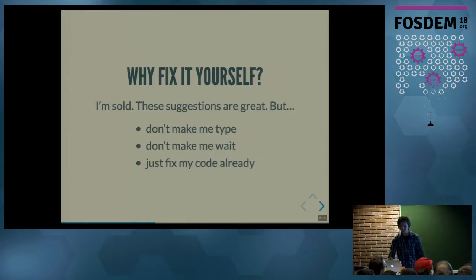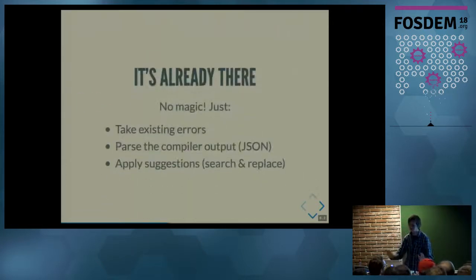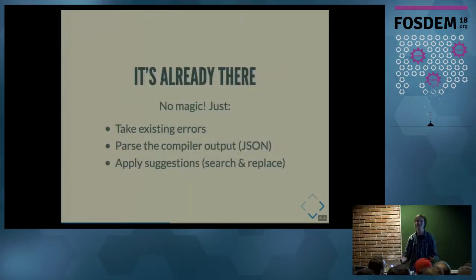Enter rust-fix. So there is no magic, and it's already happening. You've seen the arrows, you've seen the suggestions. There are messages and the diagnostics can also be outputted as JSON instead of human-readable text. So let's just take this JSON and parse the suggestions and do a bit of search and replace, and you end up with better code. At least I hope you do.